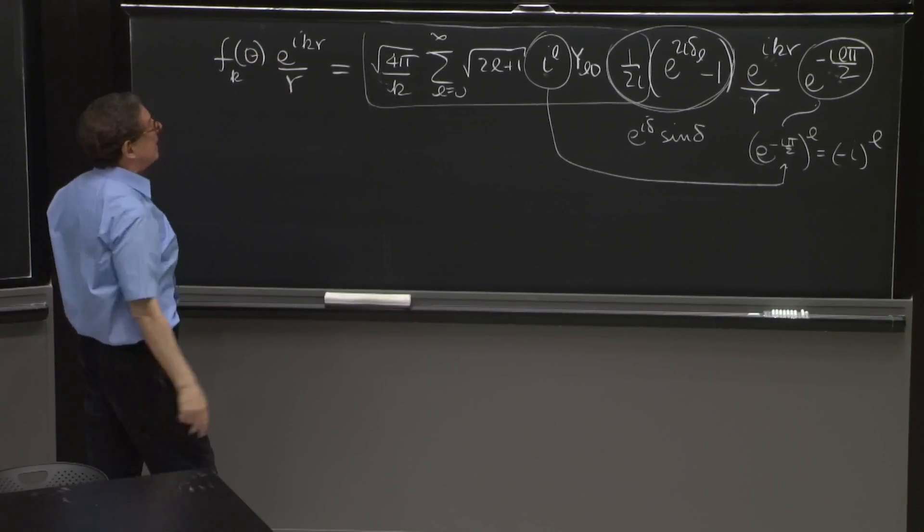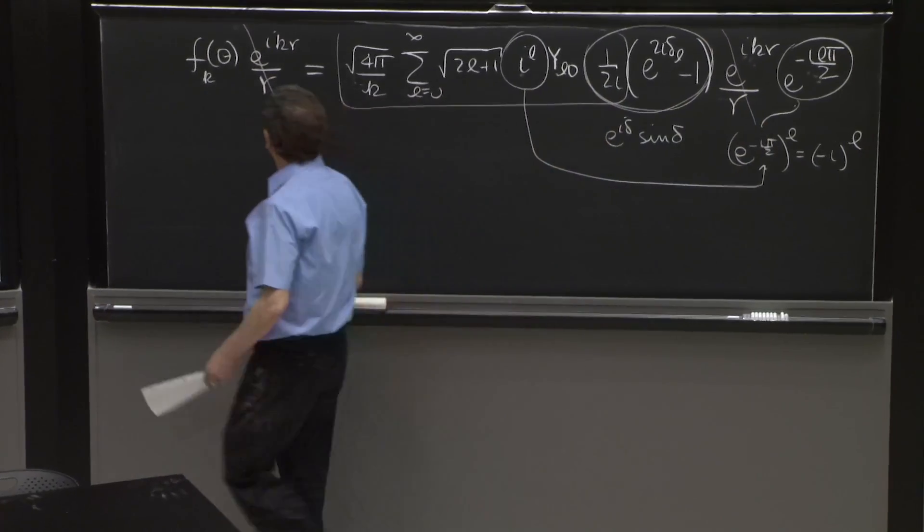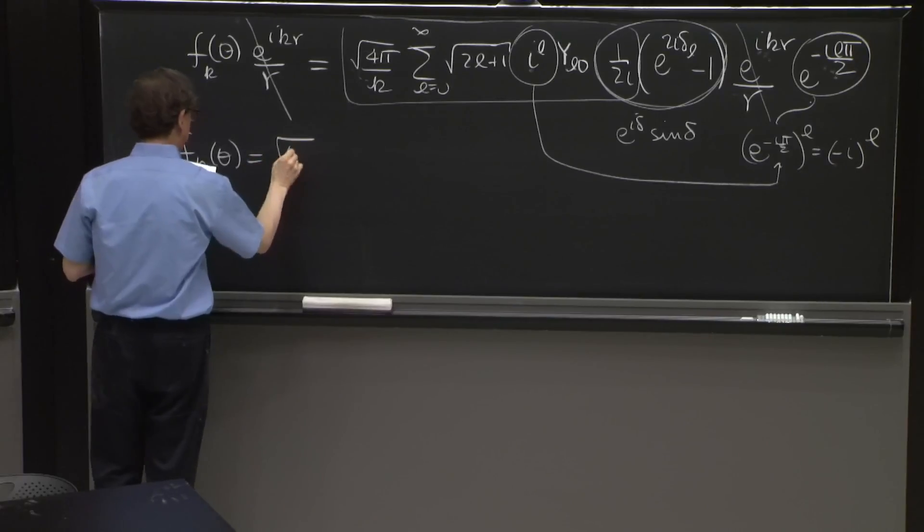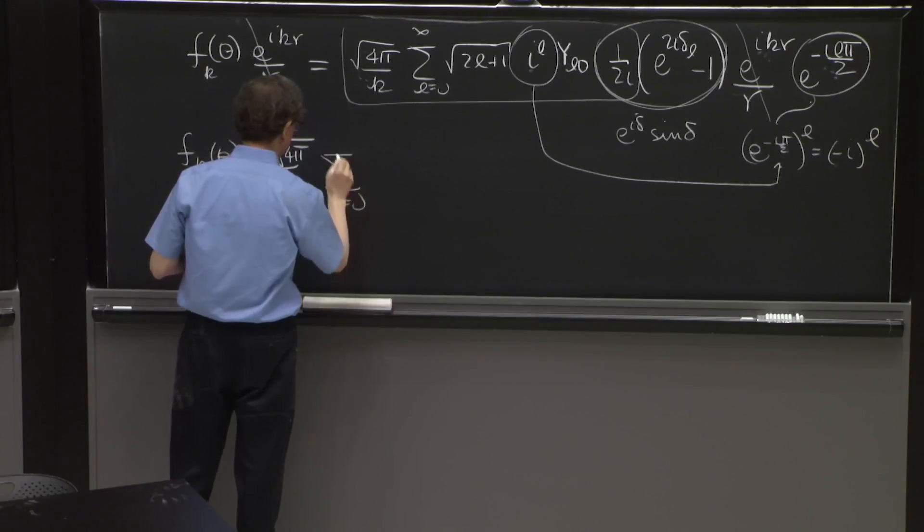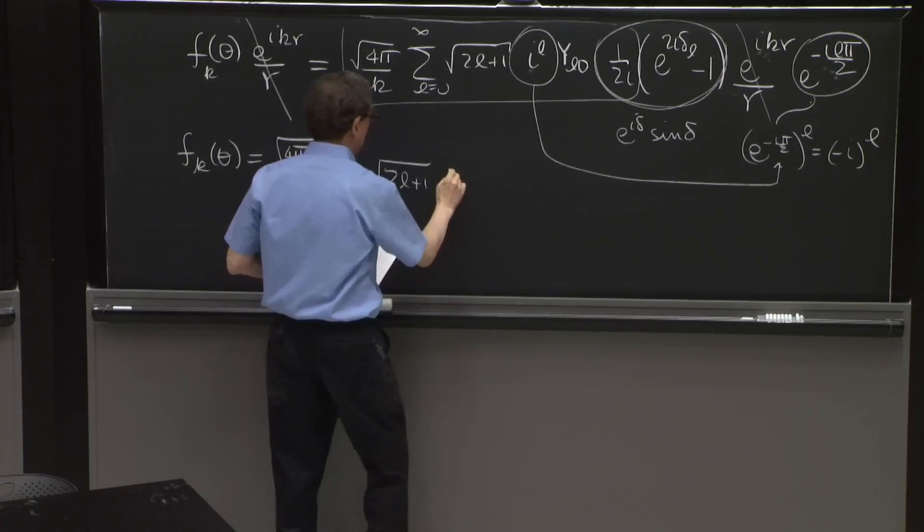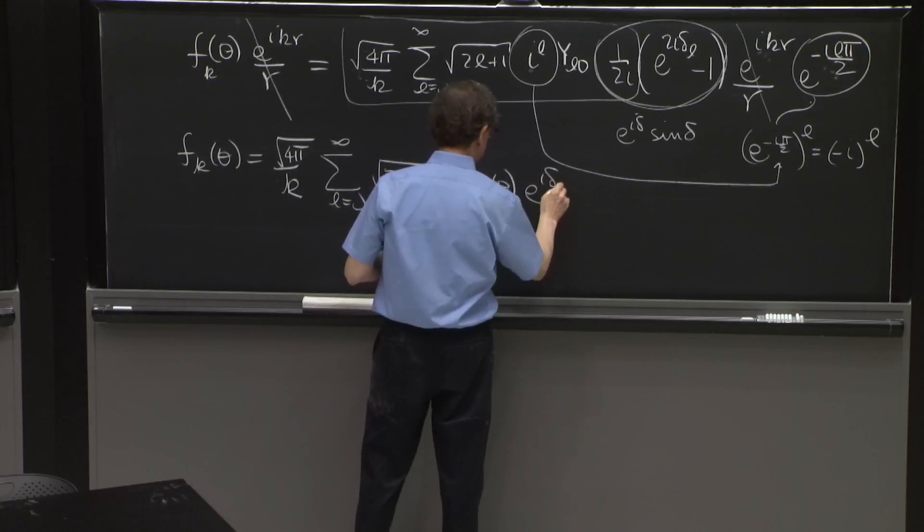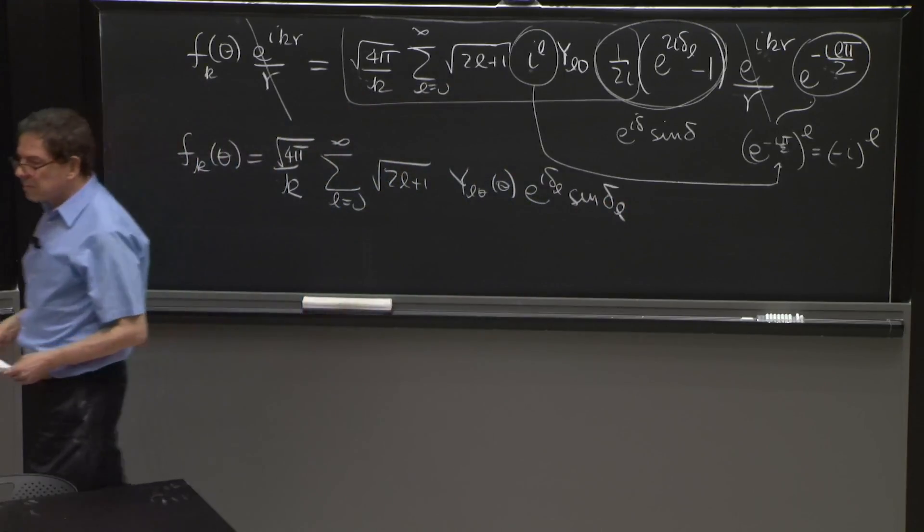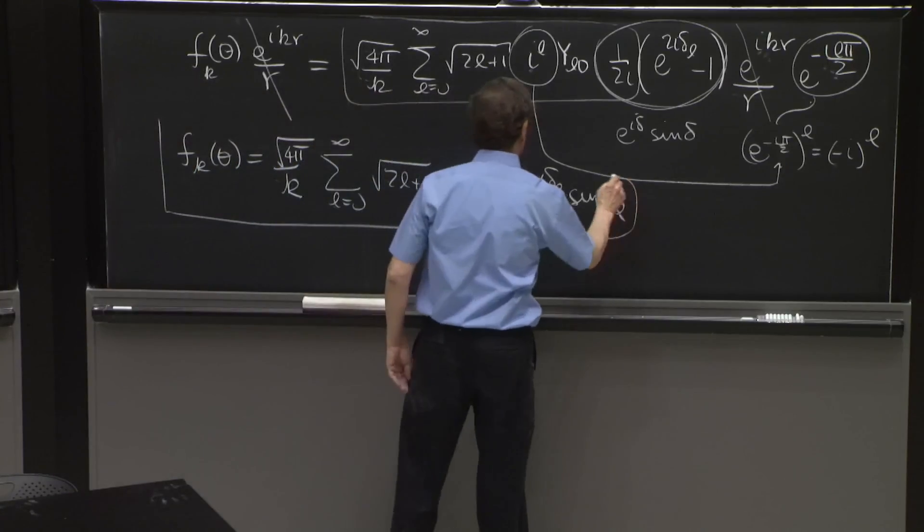So finally, and I can cancel. So happily, the r dependence is all the same. I can cancel this r dependence. And finally, we've got f_k of theta equals square root of 4π over k, sum from L equals 0 to infinity square root 2L plus 1, Y_L0 of theta e to the i delta_L sine delta_L. So that's it. That's our formula for f_k in terms of the phase shifts.